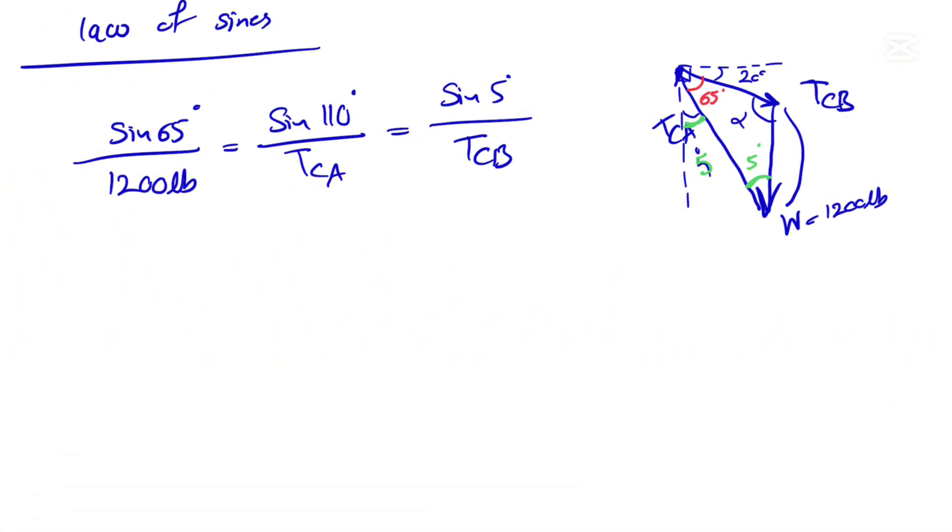Let's start with TCA. So if we look at this one, if we cross multiply these two, our TCA would be 1200 pounds times sine of 110 over sine of 65 degrees.